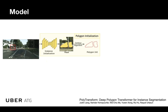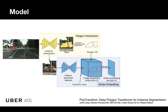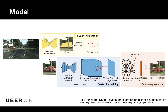Towards this goal, we can leverage any instance segmentation method to generate an initial set of polygons for each instance. Then, we predict a vertex embedding for these polygons. Finally, we deform the initial polygons using the self-attending transformer network to output an offset for each vertex.